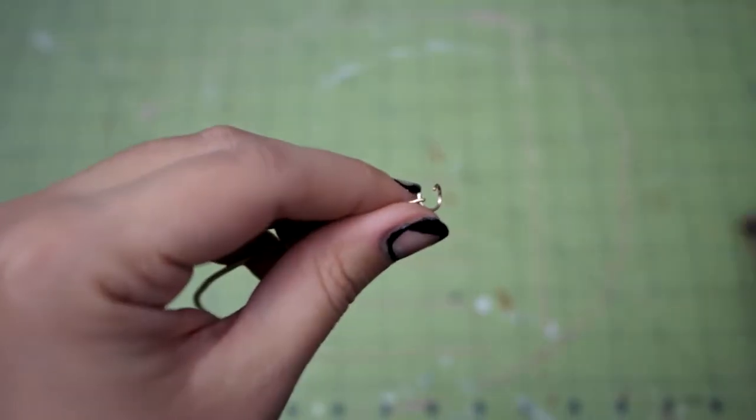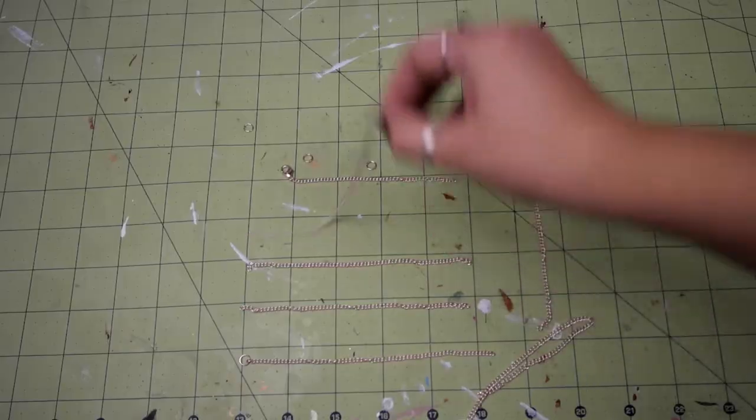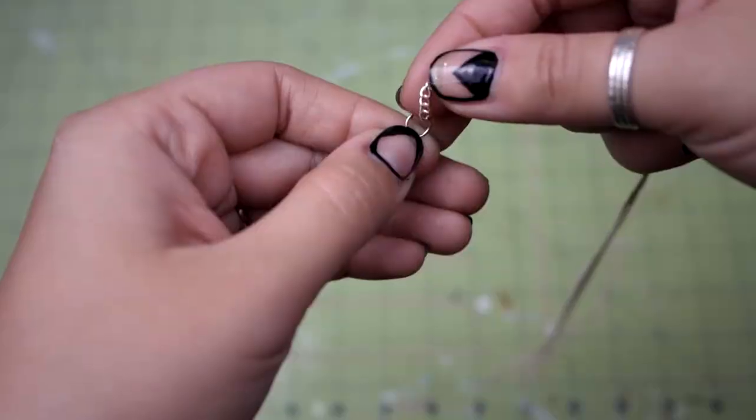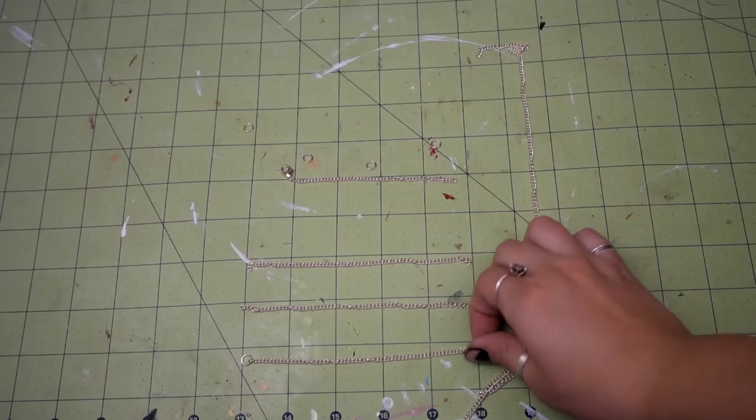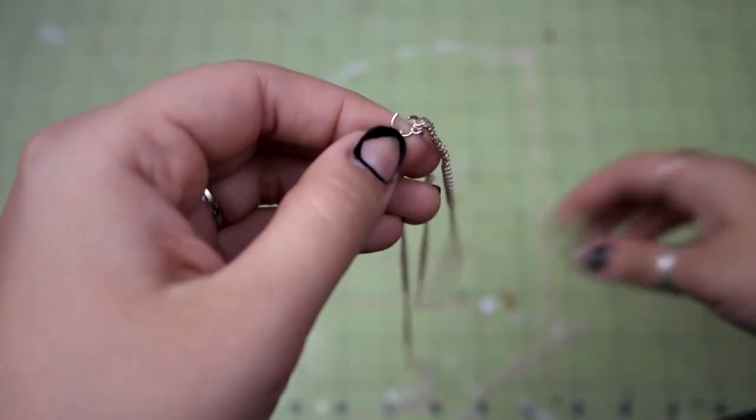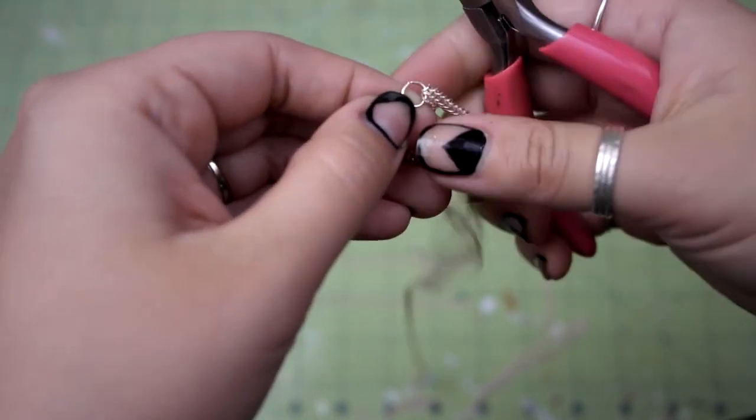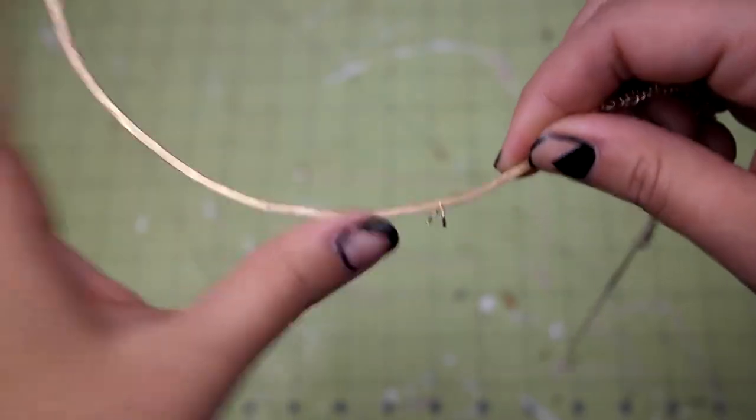Thread a jump ring through hole five. In this order, put the five inch length of chain on the jump ring, and then the twenty four inch length of chain, and then the five and a half inch length of chain with the jump ring. Make sure the jump ring on that piece of chain is hanging at the bottom. Close that jump ring and it's time to move to the next hole.